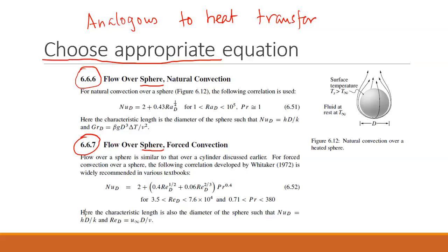And for sphere, we have two formulas then, for natural and for forced. So this is obviously for forced convection because we have a velocity. U infinity is given. A velocity is given. So for forced convection, then this is our equation.